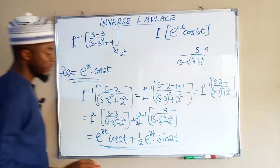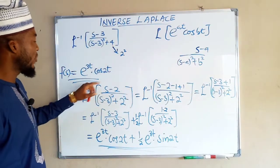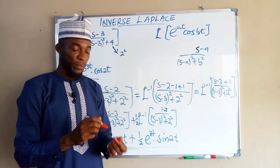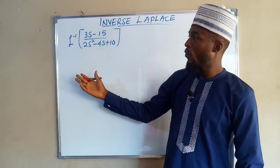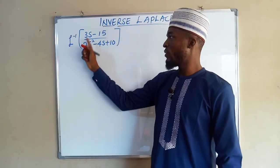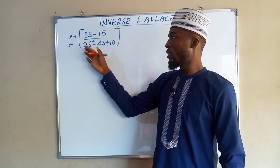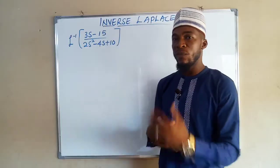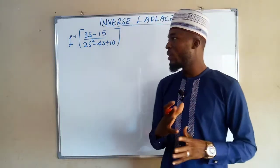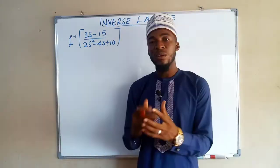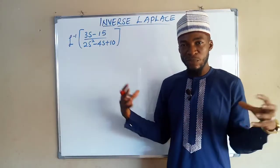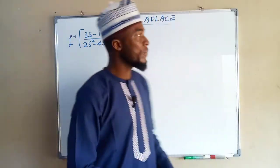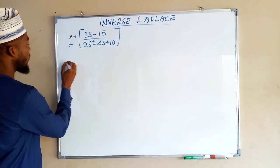So the final answer is e^(3t)cos(2t) plus (1/2)e^(3t)sin(2t). Now let us look at another problem. We are asked to find the inverse Laplace transform of (3s minus 15) divided by (2s² minus 4s plus 10). We don't have a standard form that directly matches this, so we need to perform some manipulation.